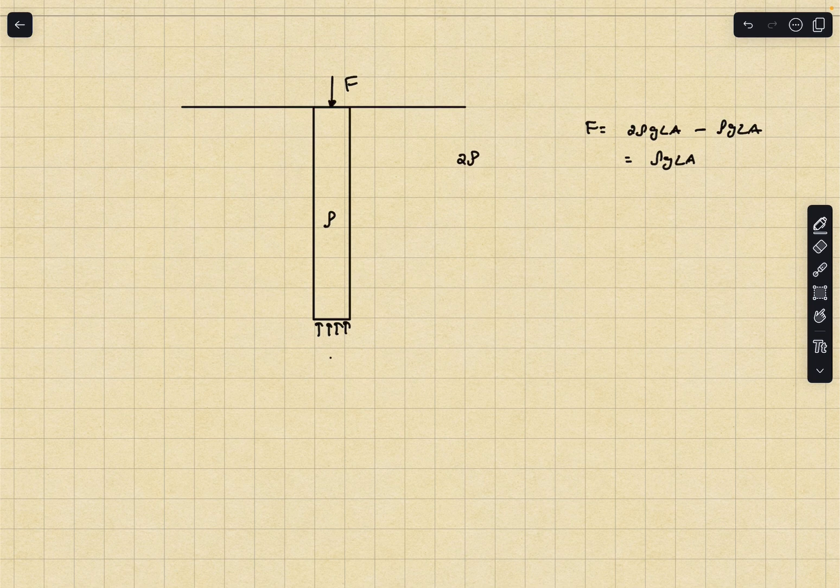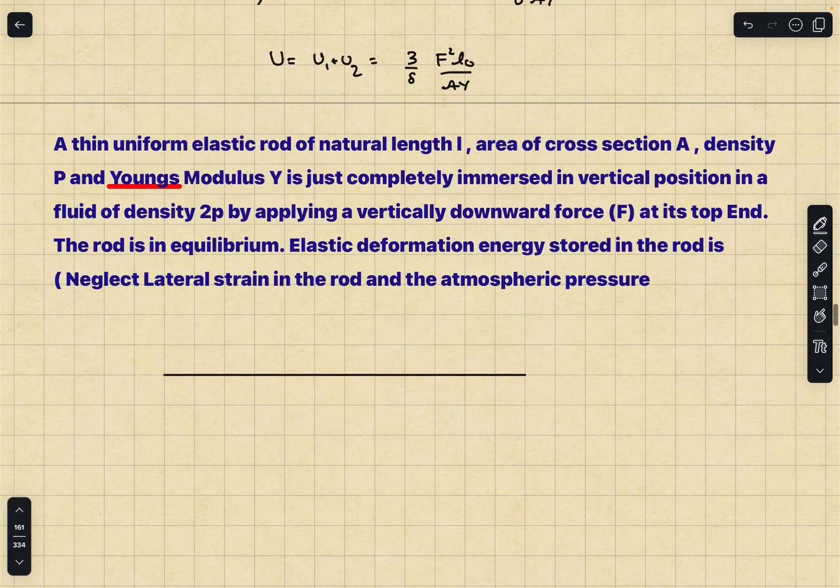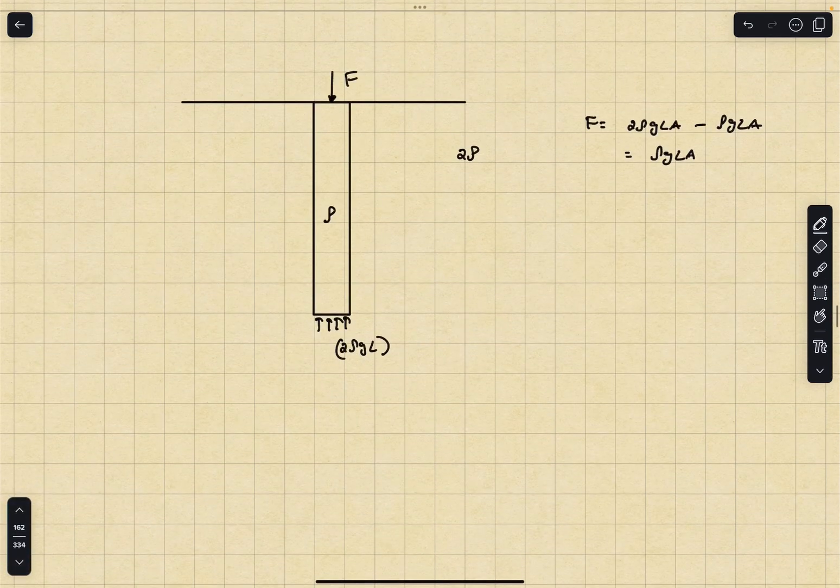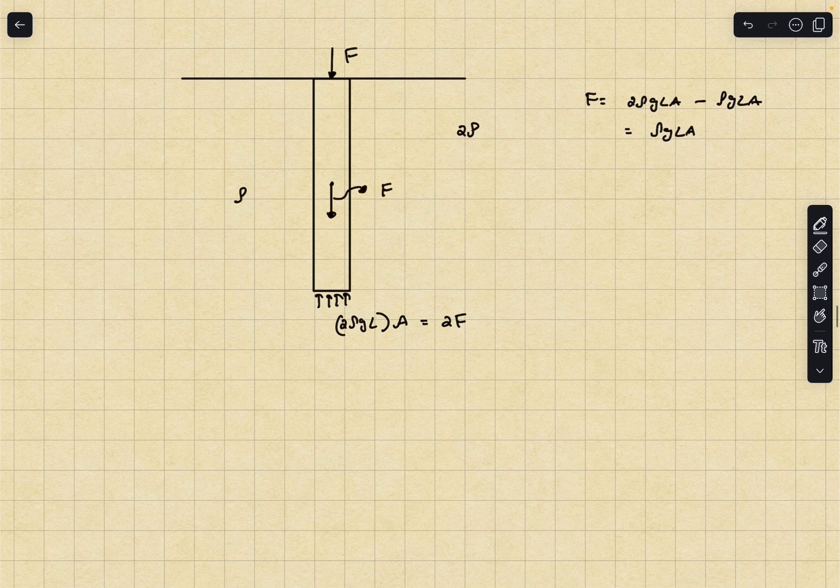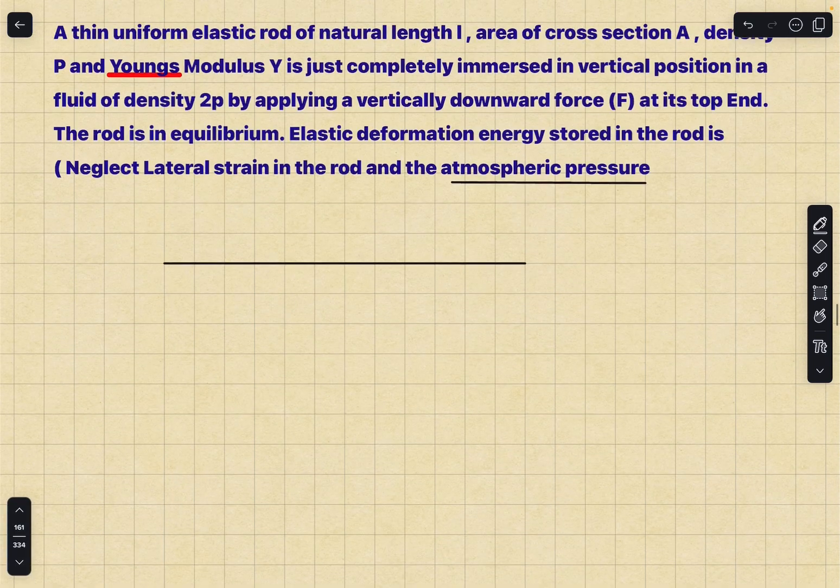Axially speaking, the forces are only applied at the top surface and the bottom surface and also the weight of the rod. At the bottom surface the force is 2 rho GL which is the pressure at the bottom, which is the gauge pressure at the bottom. They mentioned to ignore atmospheric pressure, so we are going to do that. The pressure is 2 rho GL and we multiply it with the cross-sectional area A. So this is technically just 2F. The weight of the rod is going to be F for the rod to be in equilibrium.